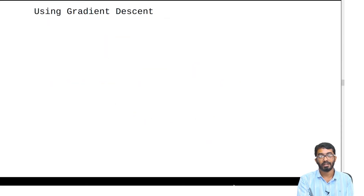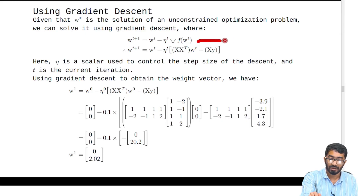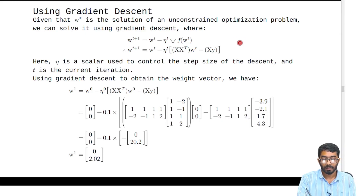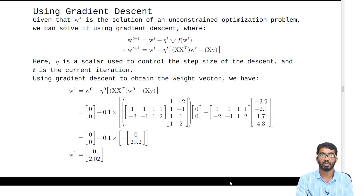Now let's find w using gradient descent. w* is the solution of an unconstrained optimization problem. We can solve it using gradient descent, where this is the gradient descent equation. t represents the iteration number, and eta is the scalar used to control the step size — eta is the hyper parameter which we find using experimentation.